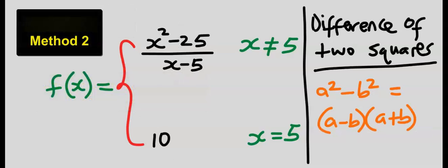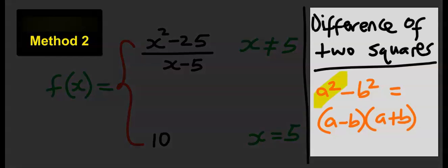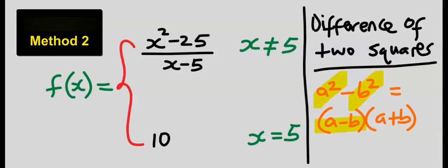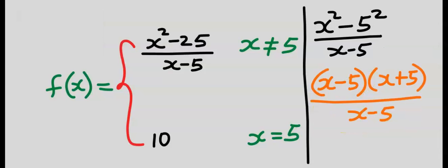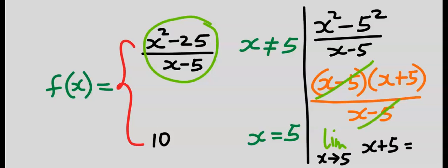If you decide to use difference of two squares, a squared minus b squared will give you a minus b in bracket, a plus b in brackets. If we apply difference of two squares to this, this will take away this and we're going to be taking the limit of x plus 5. If you substitute 5 you end up getting 10.